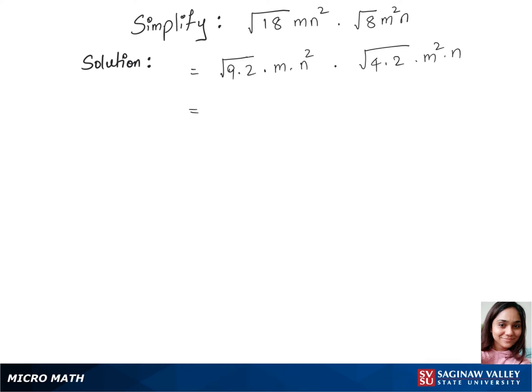Now let's separate the square root between 9 and 2 here. So that's square root of 9 can be written as 3 squared times square root of 2 times mn squared. Let's do the same thing here, separate square root. So that's square root of 4 is 2 squared times square root of 2 times m squared n.